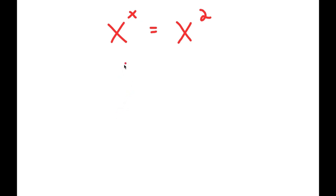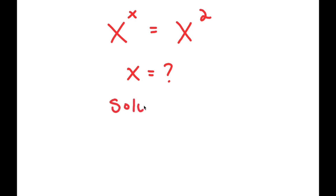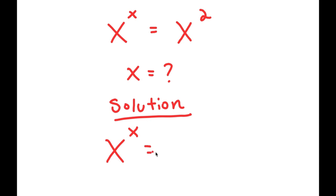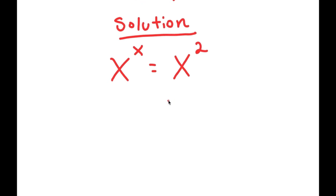In this video, I'm going to be solving the equation x to the power of x is equal to x to the power of 2. My only variable in this equation is x, so that's obviously the variable I'm going to be solving for. I'm going to first write my equation down here: x to the power of x is equal to x to the power of 2. I'm going to start by dividing both sides by x to the power of 2.